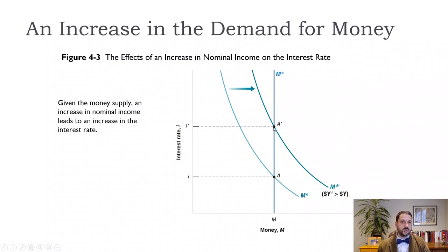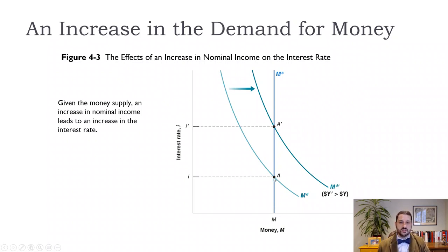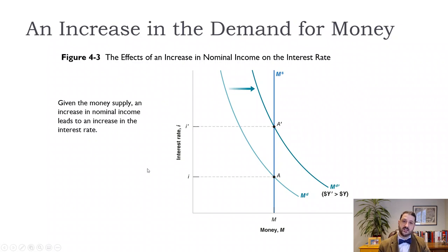If money demand increases and the central bank does not change the money supply, the interest rate rises from i to i-prime — but the quantity of money stays fixed. This matters because in the medium run, interest rates are a key price that brings the economy back to equilibrium. In the short run, the central bank can choose whether to allow interest rates to rise or to increase the money supply and push rates back down.